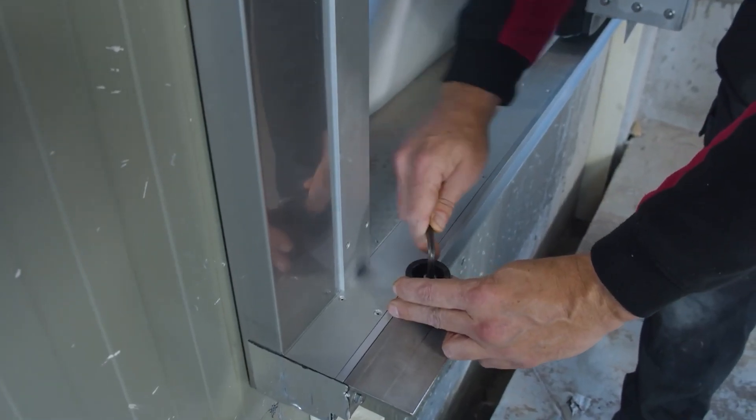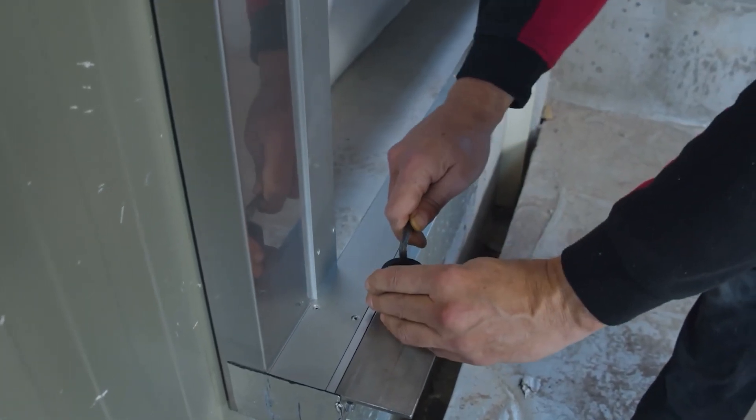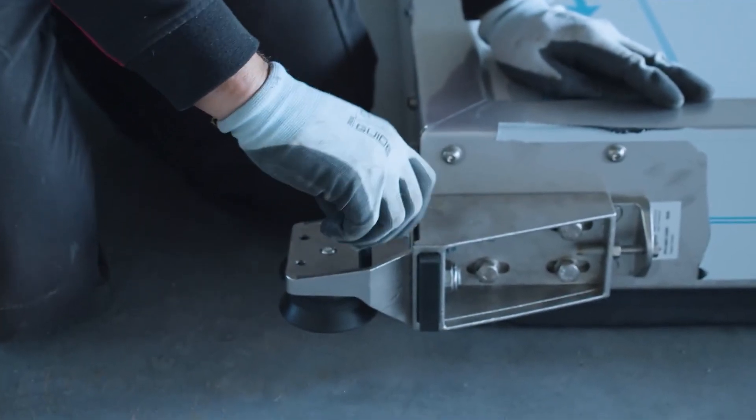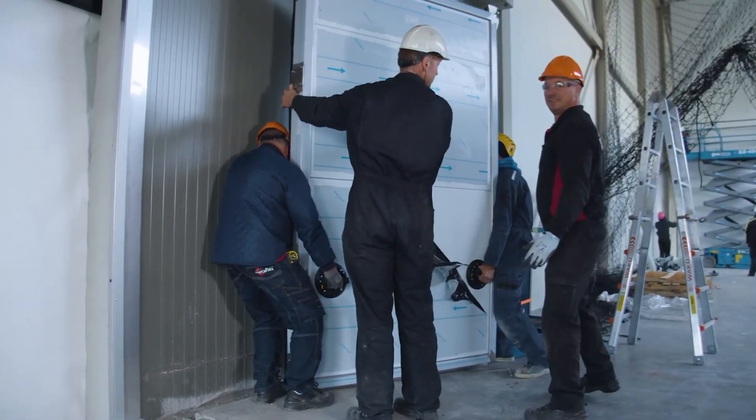Mount the guiding cams on the floor. Assembly of the door blade. Disassemble the failure prevention and hang the door to the rail.